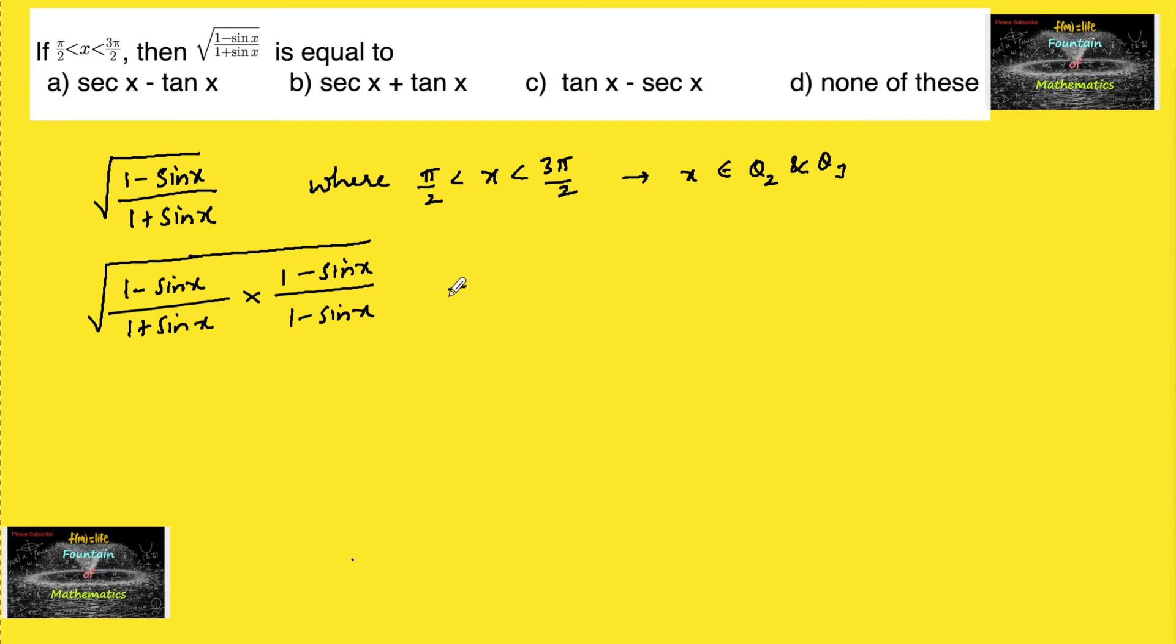So that we can write this as under root of 1 minus sin x whole square upon 1 plus sin x into 1 minus sin x is 1 minus sin square x. By using a plus b into a minus b, a square minus b square. So that is 1 square minus sin square x.